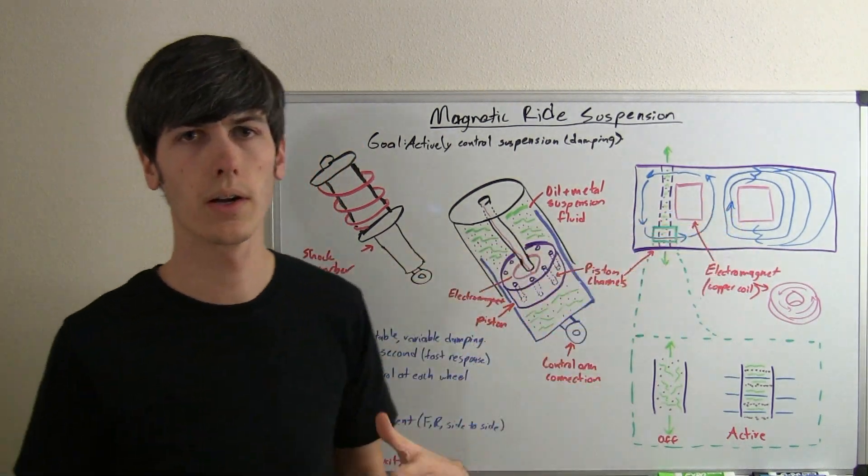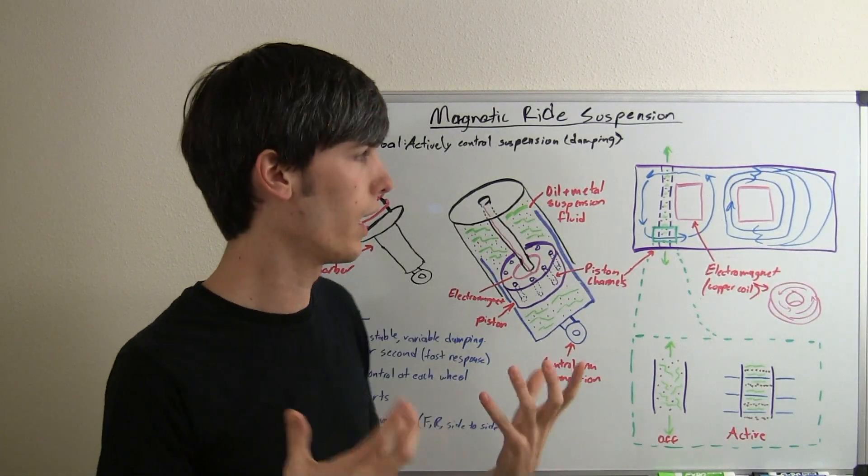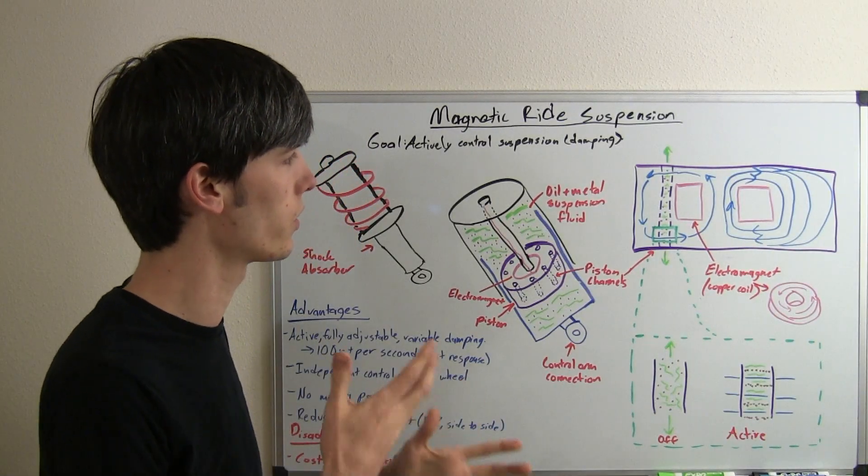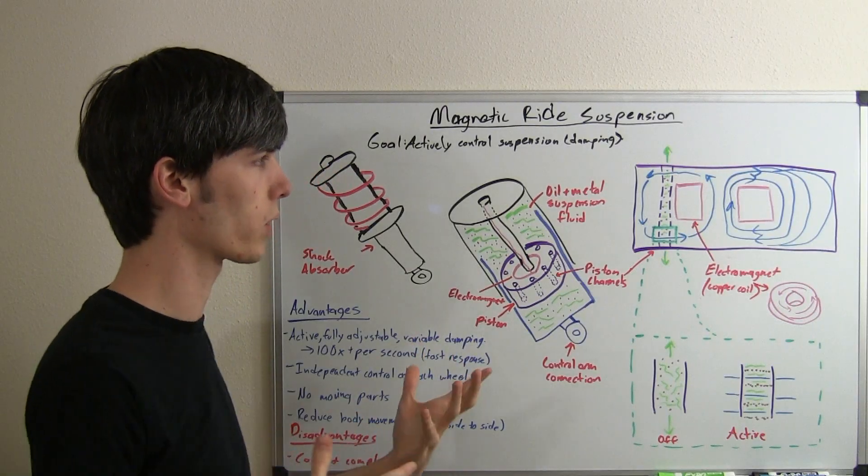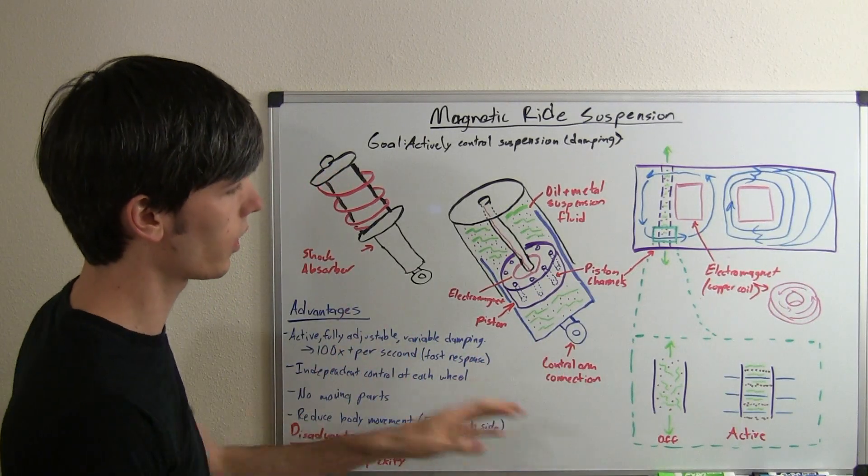And it does this with a controller. And a lot of cars will have different settings so you can change how much it interferes and how much it changes the suspension feel as you're driving. You can make it more comfortable, more rigid, things like that. But basically, that's how it works.